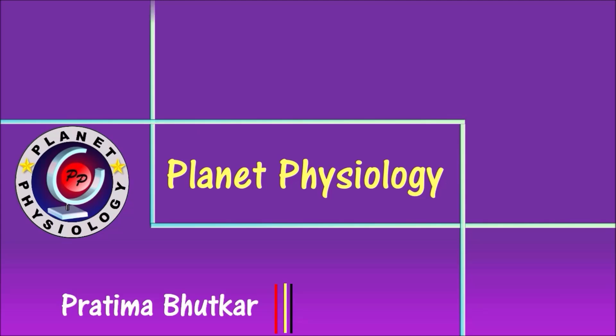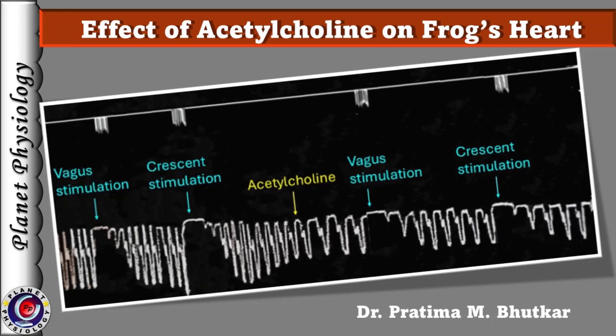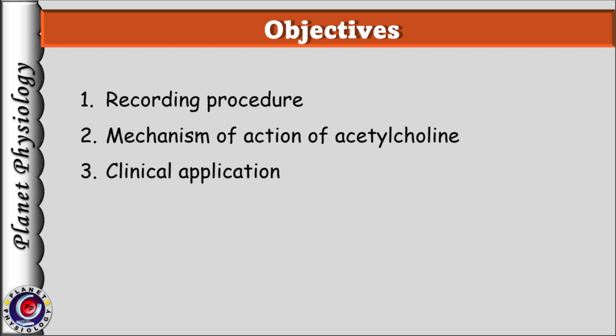Hello everyone, welcome to another experimental physiology video. Till now we have studied all the properties of cardiac muscle and nervous regulation of the frog's heart. Today we shall discuss the effect of acetylcholine on frog's heart. First we shall see the recording procedure and then discuss the effects of acetylcholine on the heart and its mechanism of action. We shall conclude the session by studying some clinical applications of this knowledge.